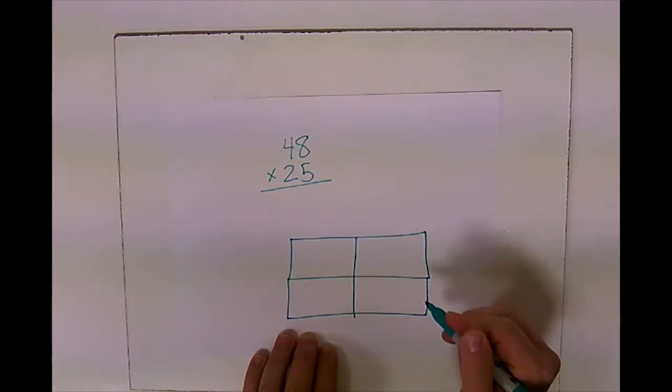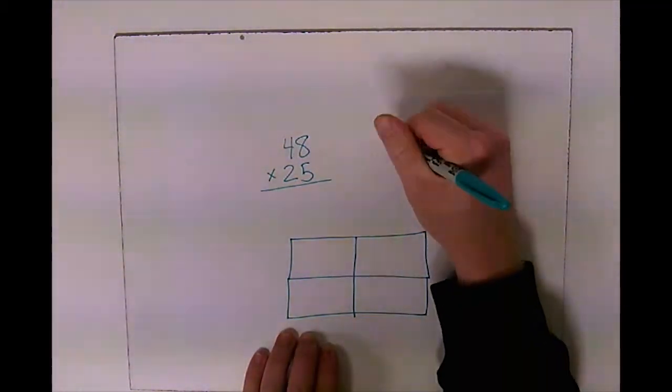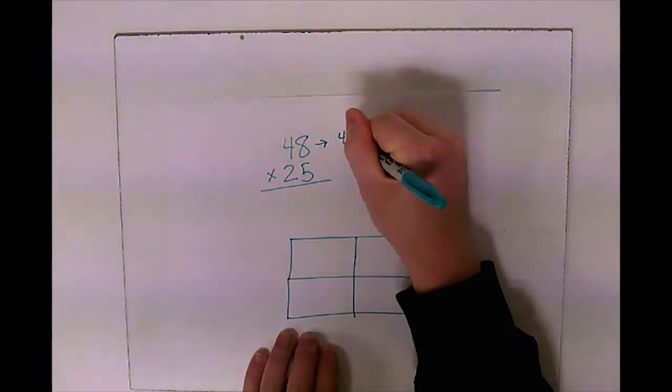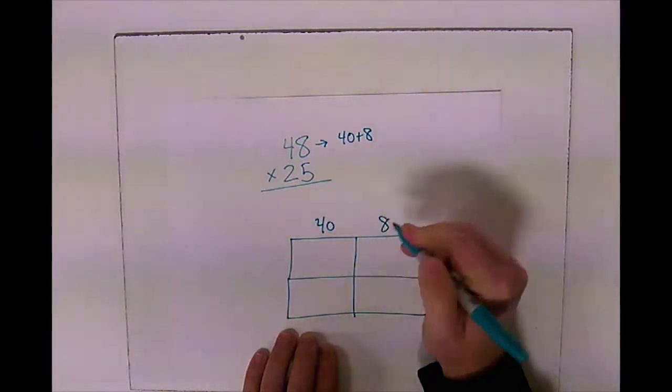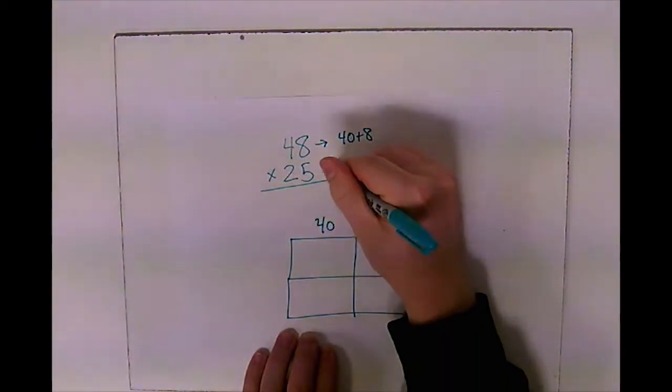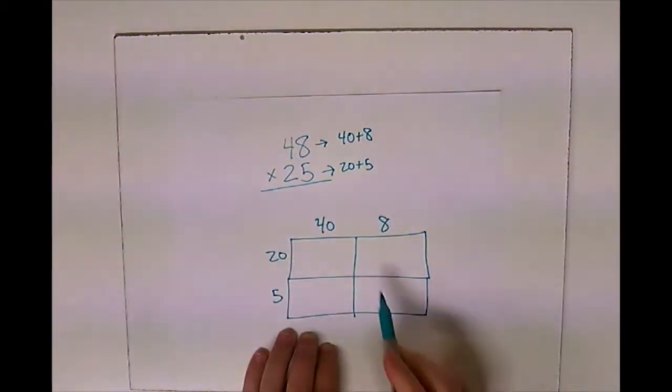Let's take this first number. We're going to take 48 and write it in expanded form, so 48 equals 40 plus 8. I'm going to put that right there. Then I'm going to take 25 and expand it to 20 plus 5. So I put one number up top, one number on the side.